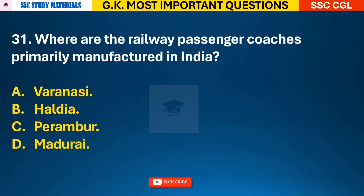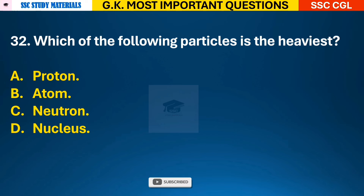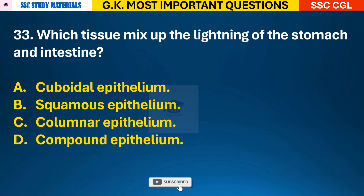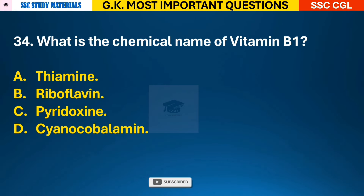Question 31: Where are the railway passenger coaches primarily manufactured in India? Answer C - it is manufactured in Perambur. Question 32: Which of the following particles is the heaviest? Answer C - the heaviest one is neutron. Question 33: Which tissue lines the stomach and intestine? Answer C - columnar epithelium. Question 34: What is the chemical name of Vitamin B1? Answer A - the chemical name is thiamine.